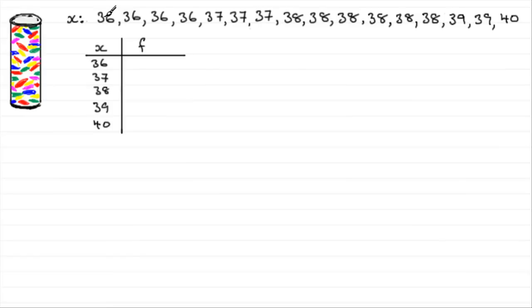Frequency is how many times an observation occurred. So 36, you see, occurred 1, 2, 3, 4. So just marking the 4 there. 37 occurred 3 times. 38 occurred 6 times. And 39, 2 and the 40 once.